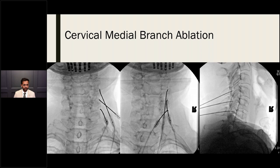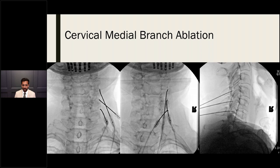Cervical medial branch radiofrequency ablation is performed after successful diagnostic blocks for facet-mediated pain. The AP view shows the needle advancing toward the articular pillar scalloping to identify the correct level. A 15-degree ipsilateral oblique shows alignment of the articular pillar. The lateral image, though not perfect, was used with sensory and motor testing — adequate motor testing confirmed lesioning could proceed safely.